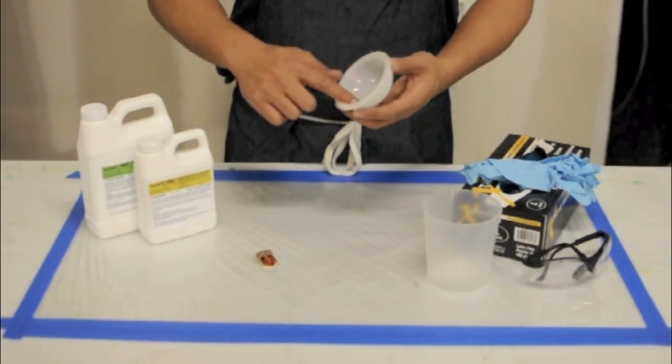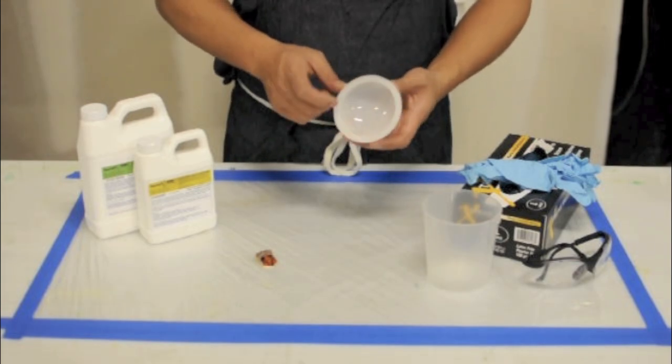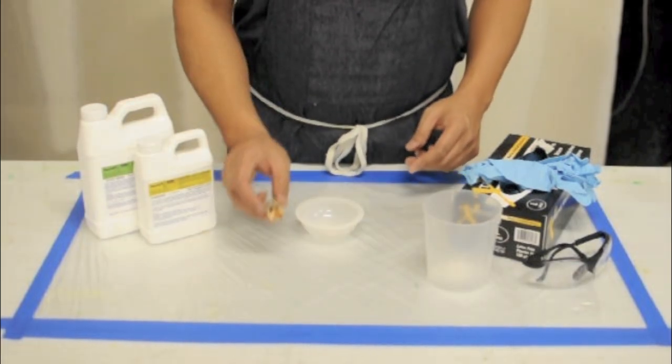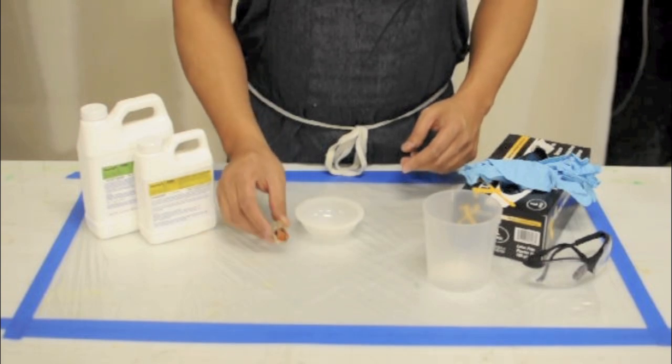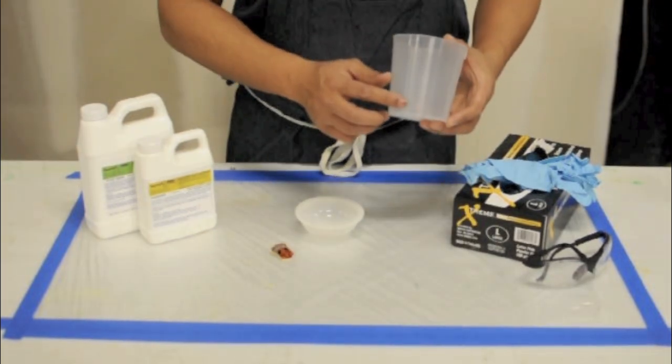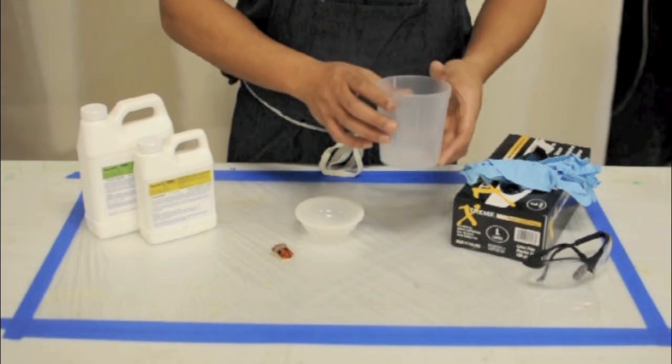your plastic mold, the object that you would like to embed in your casting, a mixing cup with volume labels for ease of measuring,